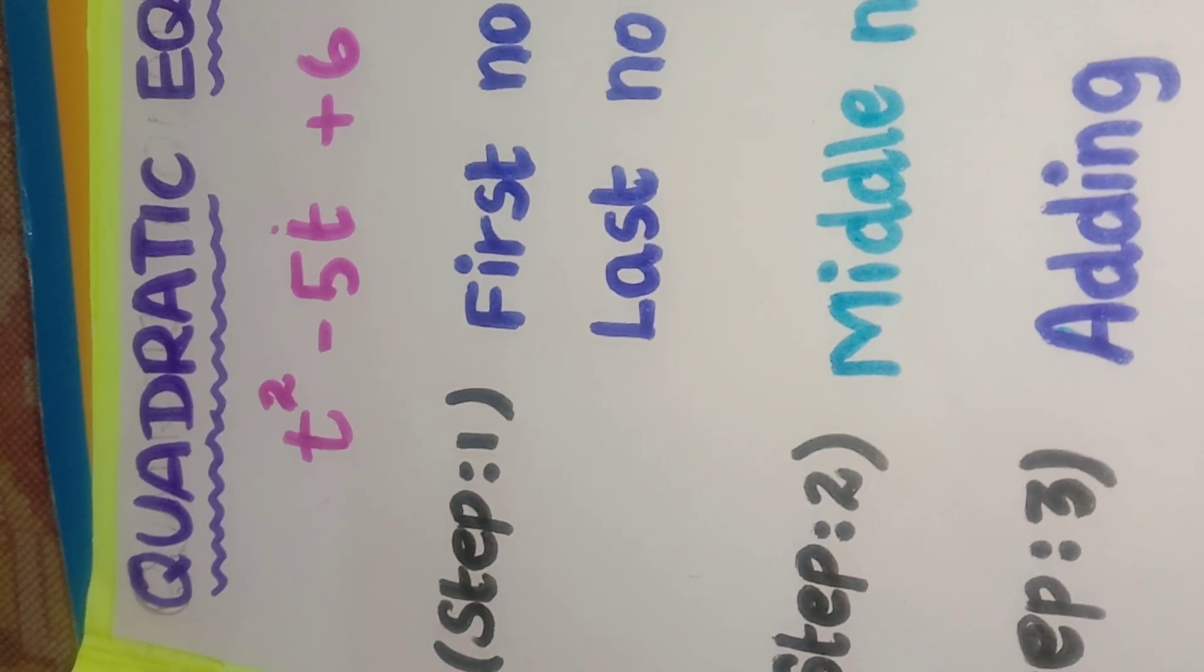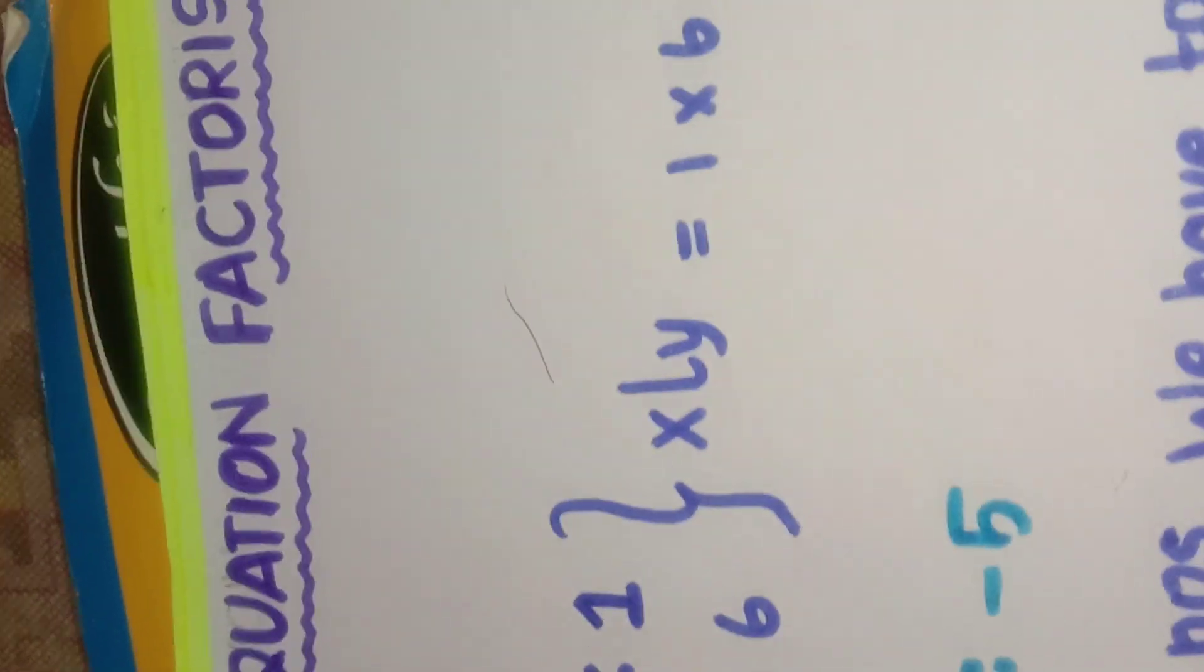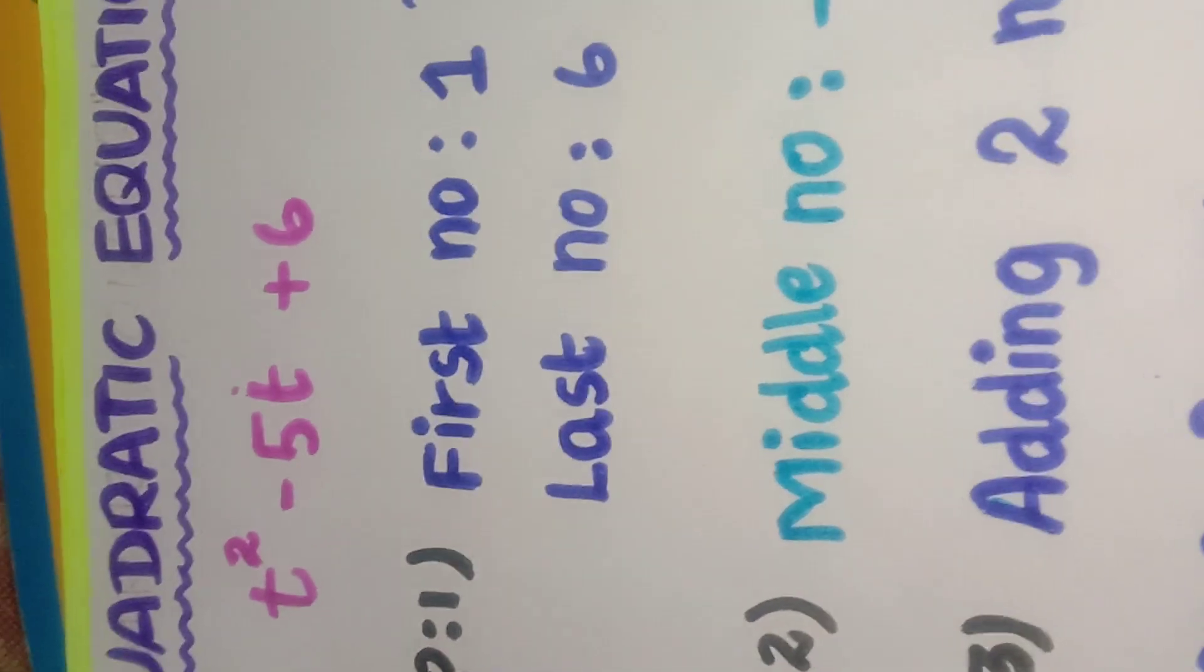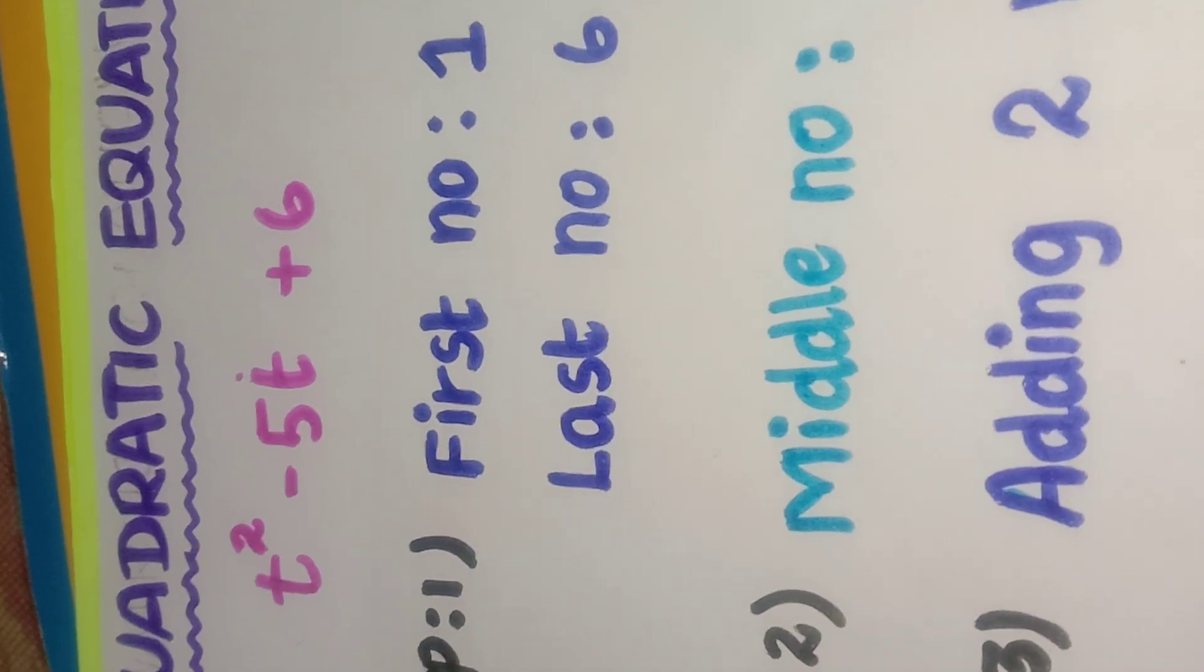For example, here I am trying to solve the quadratic equation by using the factorization method. Now I have taken t squared minus 5t plus 6.